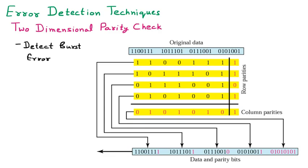VRC is the Vertical Redundancy Check and LRC is the Longitudinal Redundancy Check, and here we use a combination of both. First, the original data is divided into blocks — block one, block two, block three, and block four. These blocks are taken one by one and their parity is calculated.